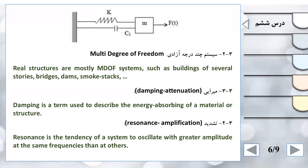میرایی - Damping/Attenuation: Damping is a term used to describe the energy absorbing of a material or structure. میرایی واژه‌ای است که برای توصیف جذب انرژی ماده یا سازه استفاده می‌شود. تشدید - Resonance/Amplification: Resonance is the tendency of a system to oscillate with greater amplitude at the same frequencies than at others. تشدید تمایل سیستم برای نوسان کردن با دامنه بزرگتر است؛ این تمایل سیستم وقتی اتفاق می‌افتد که فرکانس با فرکانس بارگذاری یکسان شود.